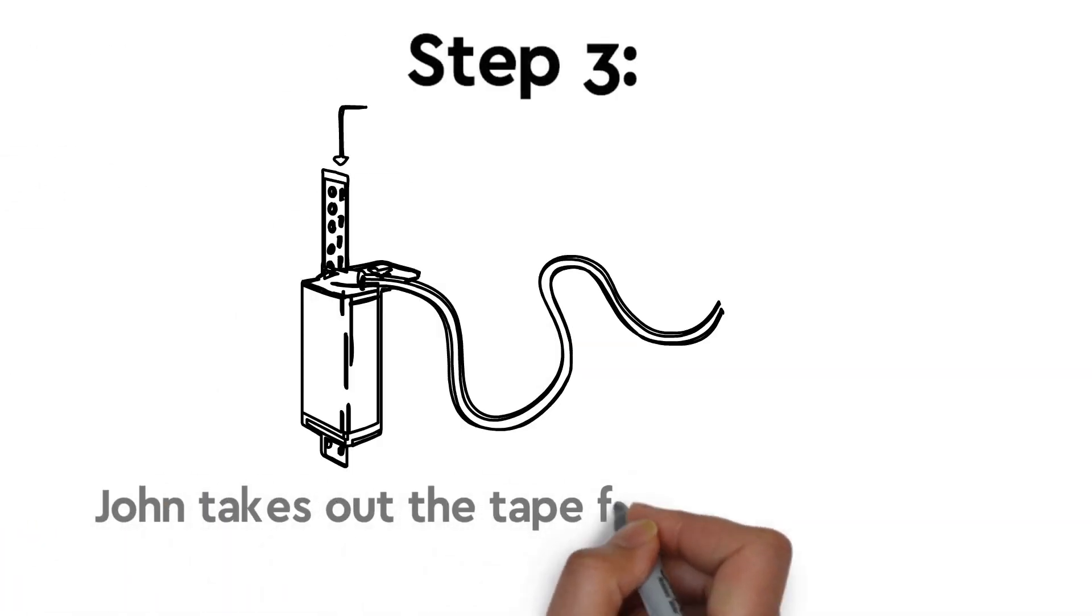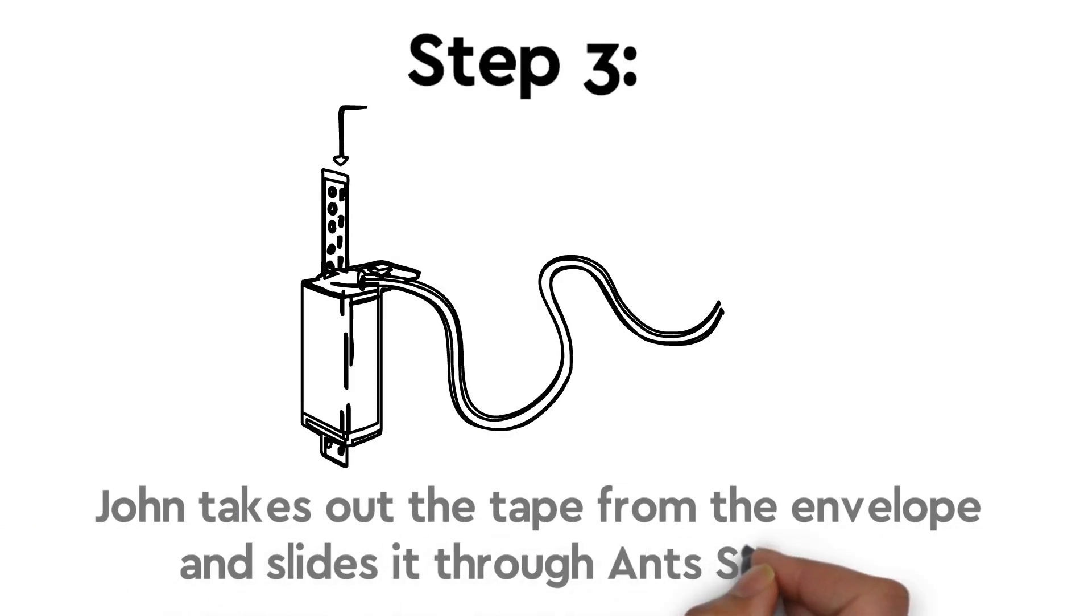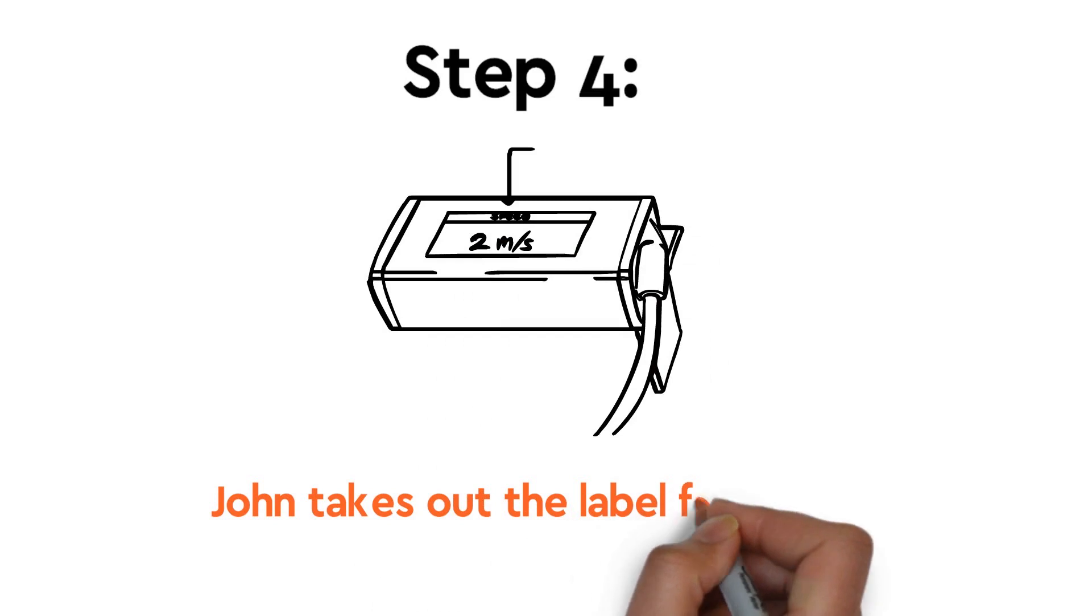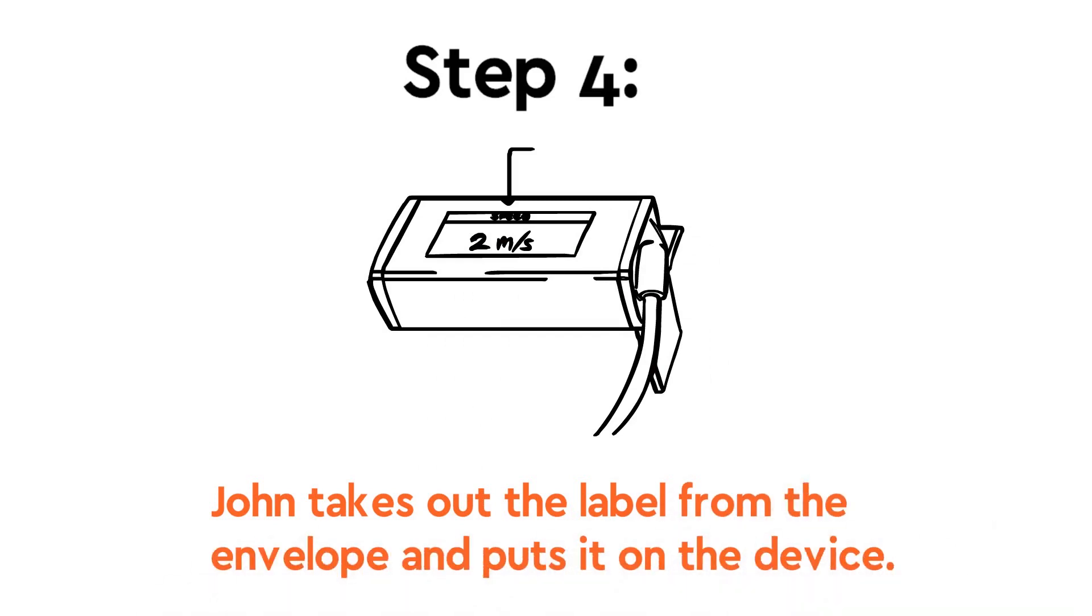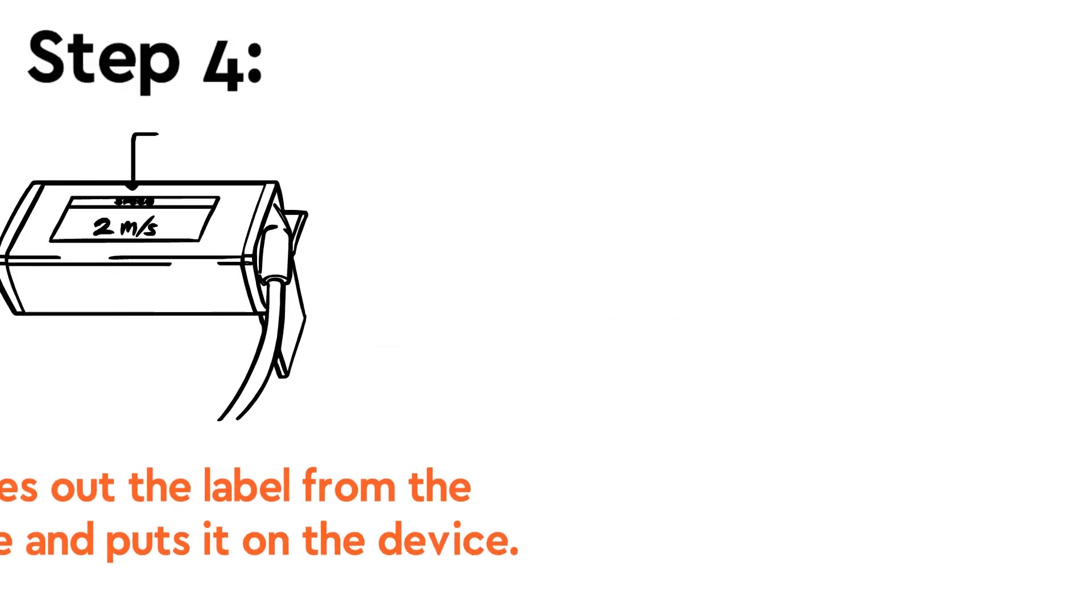Step 3: John takes out the tape from the envelope and slides it through the Ant's Shield. Step 4: John takes out the label from the envelope and puts it on the device. Wow! That was easy!